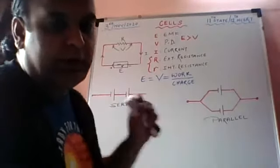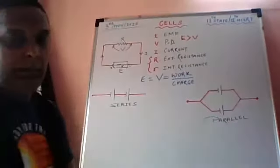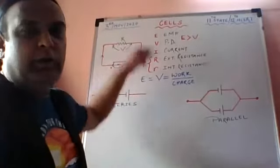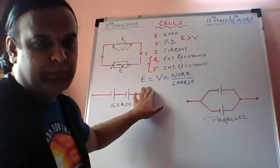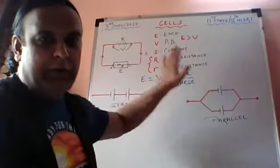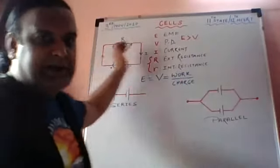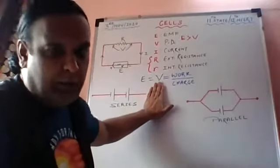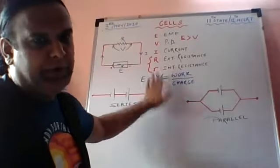When one Joule of work is done in moving a charge of one Coulomb, that gives you one Volt. Agar E define kar rahe ho, toh it is once around the complete circuit — that is the definition of E. When one Joule of work is done in moving a charge across the external resistance, that is your potential difference.